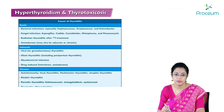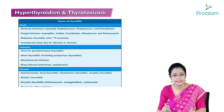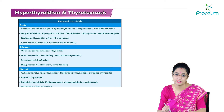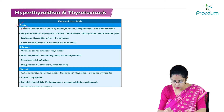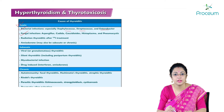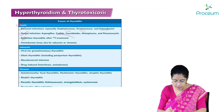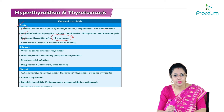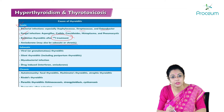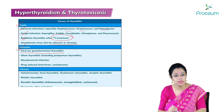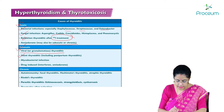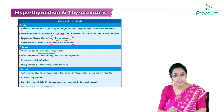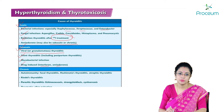Let's discuss thyroiditis. Thyroiditis may be acute, subacute, or chronic. Causes of acute thyroiditis are usually infections: bacterial (staphylococcal, streptococcal, enterobacter), fungal (aspergillus, candida, coccidioides, histoplasma, pneumocystis), radiation thyroiditis after iodine-131 treatment, and amiodarone-induced thyroiditis. Subacute thyroiditis: the commonest cause is viral; it may also be silent thyroiditis (seen during postpartum period), mycobacterial infection, or drug-induced (interferon and amiodarone).